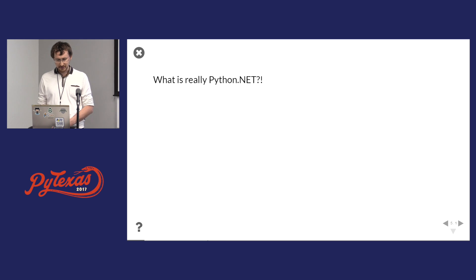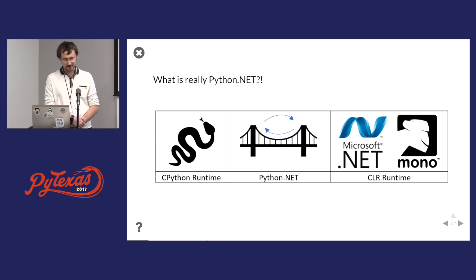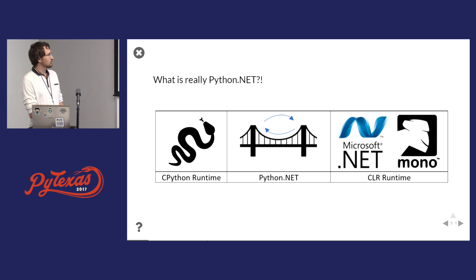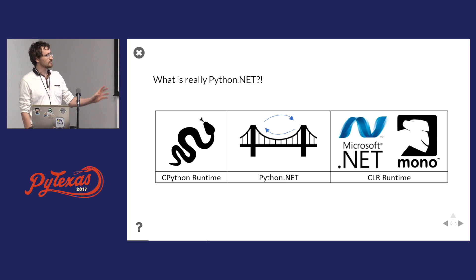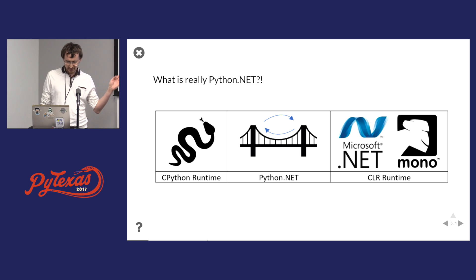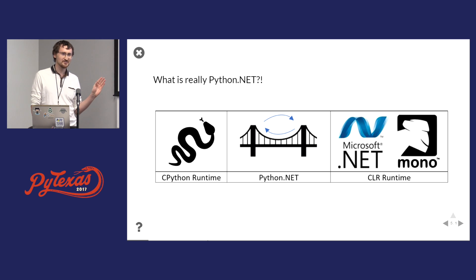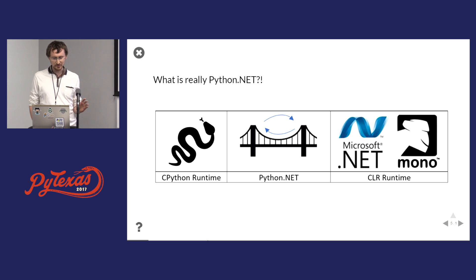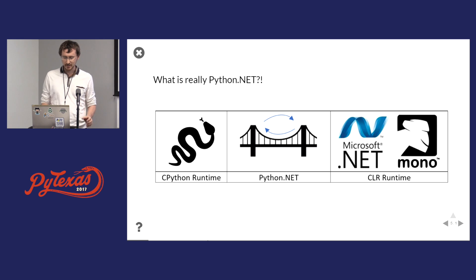So what is Python for .NET really? You have the CPython runtime on one side and the CLR runtime on the other, and Python for .NET is just an interop bridge. The bridge is very important — if you try to pass very heavy objects, it may fail. So keep your interop code as lean as possible, and do most of the logic on one side or the other.